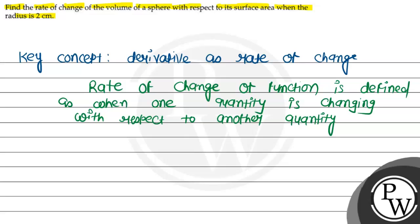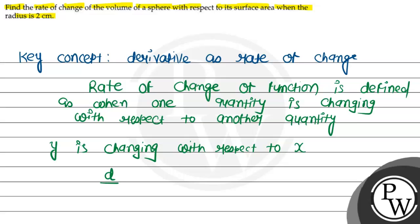That means, suppose y is changing with respect to x, then it is mathematically given as d by dx. With the change of x, change of y — so that will be dy by dx. This is the rate of change. And to find the rate of change, we have to find the derivative of that function.